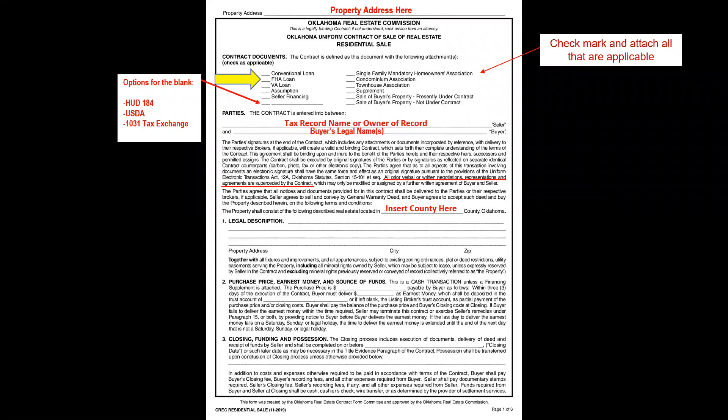The county can be found on the same tax records where you looked up the owner's name. You'll also get the legal description from those records. If the legal description is too long, write 'see attached supplement,' check the box at the top, and attach a blank addendum with the full legal description. Write the physical address in the provided field. Note that brand-new builds and land transactions require separate contracts.